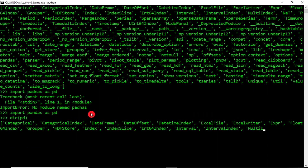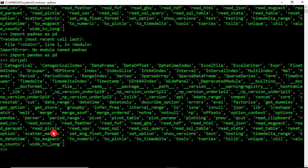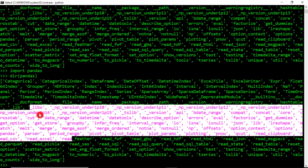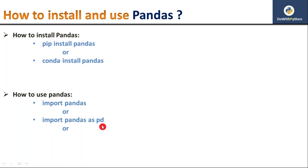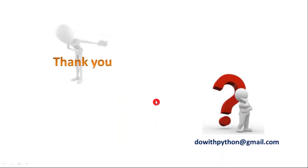Using dir(pd) you can see all operations available with Pandas. If you import it simply as pandas and use dir(pandas), you get the same list of operations — they are all the same. Going forward I will use 'import pandas as pd'. The alias is just a shortcut name instead of the full lengthy name. Thank you for watching — please subscribe to the channel for updates on new videos, and give a thumbs up if you liked this.